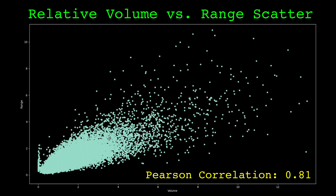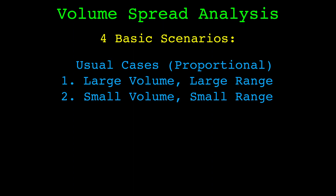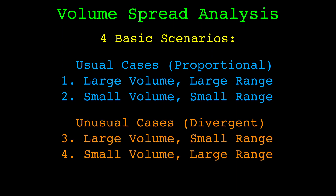What is interesting is when the volume and price deviate from this relationship. Most sources on volume spread analysis describe four scenarios. The first two are the ordinary cases: large volume with large range, or small volume with small range. These align with the theory that volume confirms price. The two unusual cases are large volume with small range, and large range with small volume.